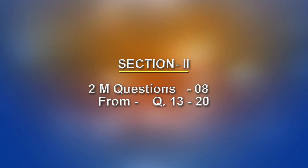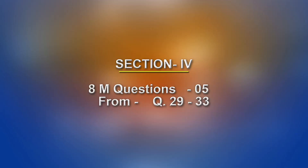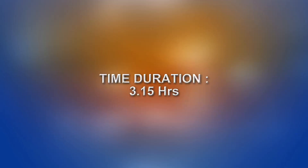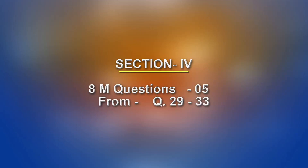The question paper has sections. The fourth section contains 8 marks questions, from question number 29 to 33 — 5 questions. One important thing to highlight: in the first section there is internal choice, and for the 8 marks questions from question number 29 to 33, for example question 29 has options 29a or 29b, and you can answer either one.